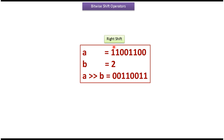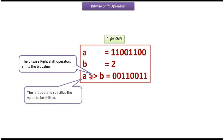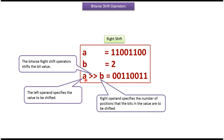Here we will see the right shift operator, which shifts the bit value. The left operand specifies the value to be shifted, and the right operand specifies the number of positions that the bits in the value are to be shifted. For A right shift B, where A is this value and B is 2, each bit in the A value will be shifted to the right side by 2 positions.